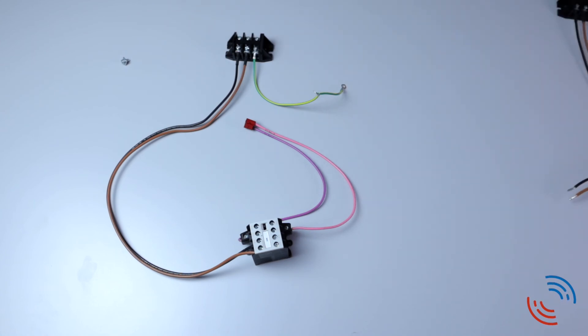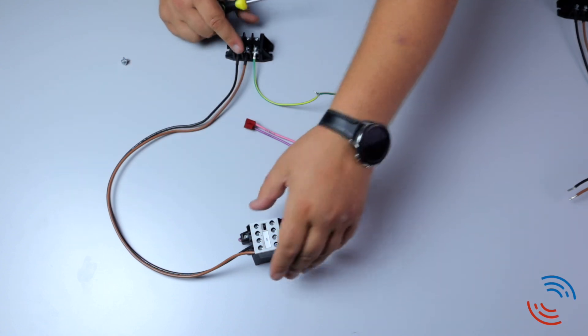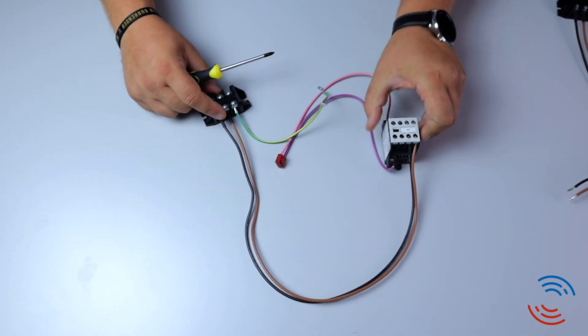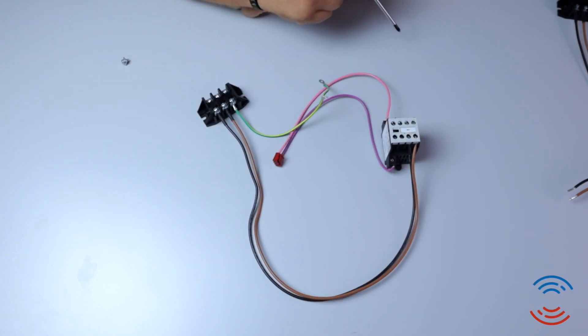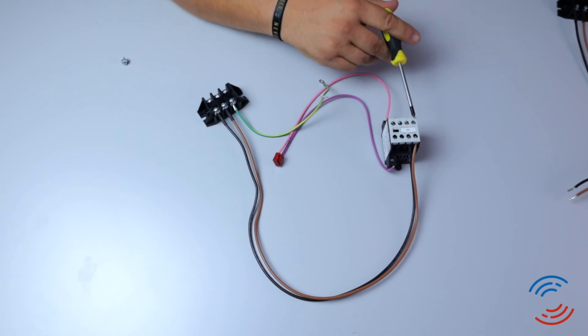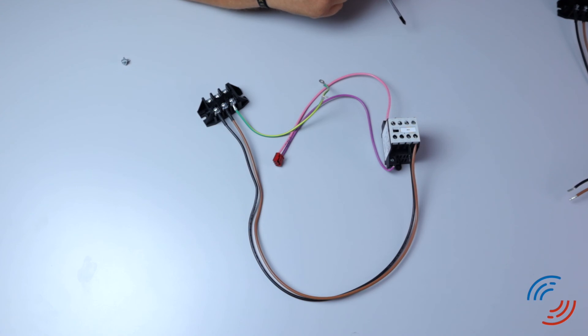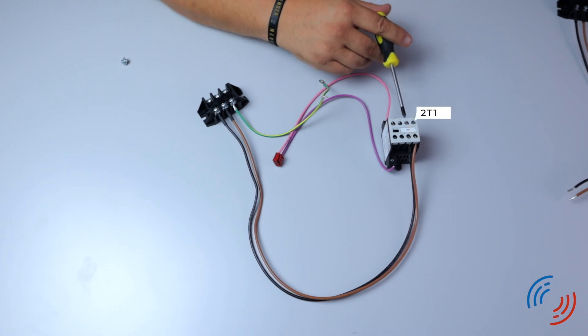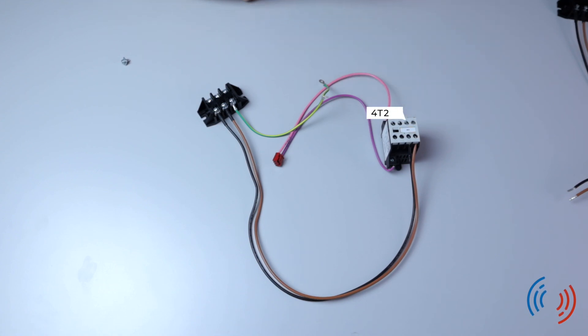What we're now left with is the contactor kit. We're going to take our live and neutral supply for the booster heater or immersion directly into the bottom two contactor terminals here. Your live supply goes into 2t1 and then your neutral goes into 4t2.